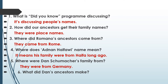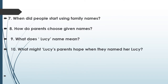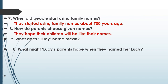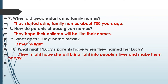Number five: where were Dan Schumacher's family from? They were from Germany. Number six: what did Dan's ancestors make? They made shoes. Number seven: when did people start using family names? They started using family names about 700 years ago. Number eight: how do parents choose given names? They hope their children will be like their names. Number nine: what does Lucy's name mean? It means light. Number ten: what might Lucy's parents hope when they named her Lucy? They might hope she will bring light into people's lives and make them happy.